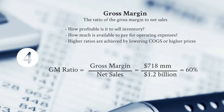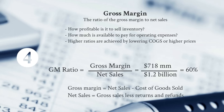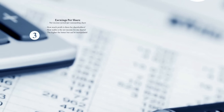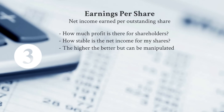Gross margin in dollars is calculated as net sales minus cost of goods sold. Net sales is gross sales less returns and refunds — the amount we actually get to keep after customers have had a chance to return or refund the product.